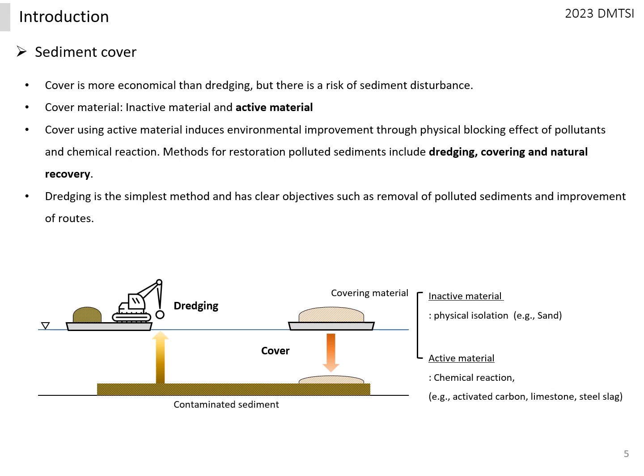The cover material is divided into two types. The inactive material simply physically blocks the interface between the water layer and sediment layer to prevent pollutants from being eluted into the water layer. The active material induces the reduction of pollutants through chemical reaction and also includes the physical blocking effect, with the advantage of minimizing disturbance by reducing cover thickness.